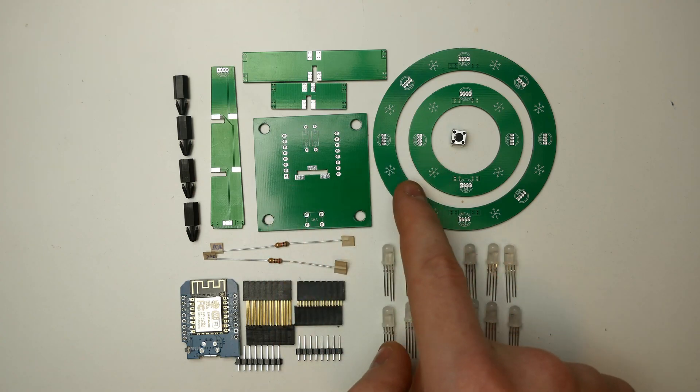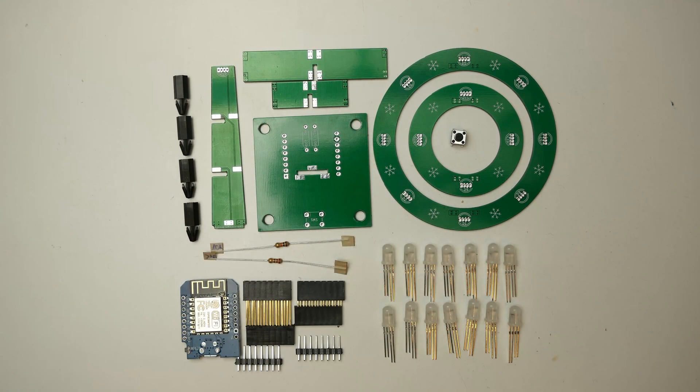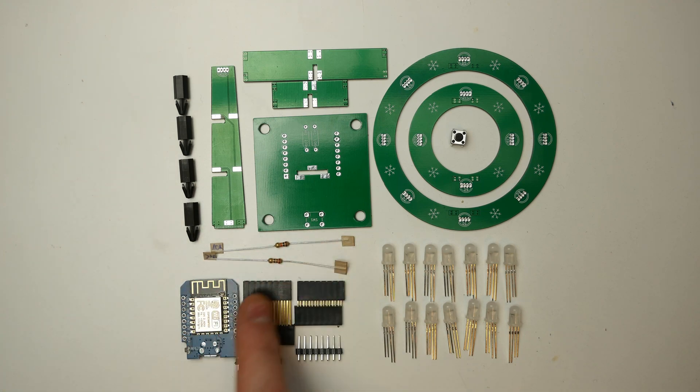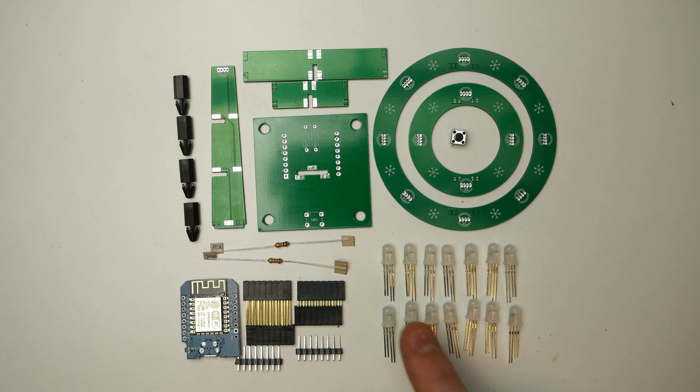The Christmas tree consists of a baseboard, two rings, two branches, a tree trunk, four plastic spacers, two resistors, an ESP8266 with accessories, 14 LEDs, and a push button.